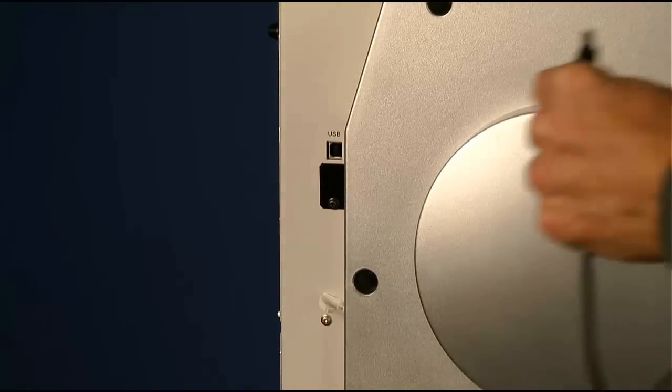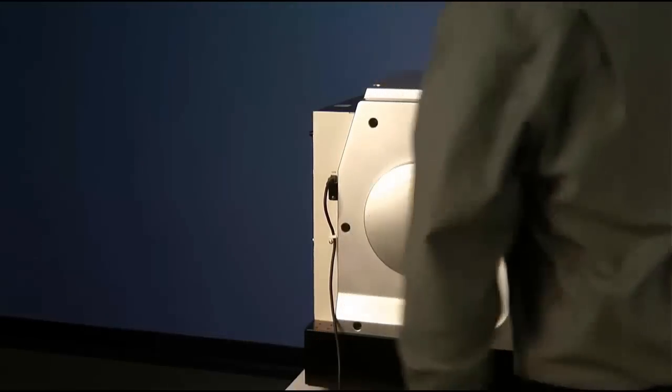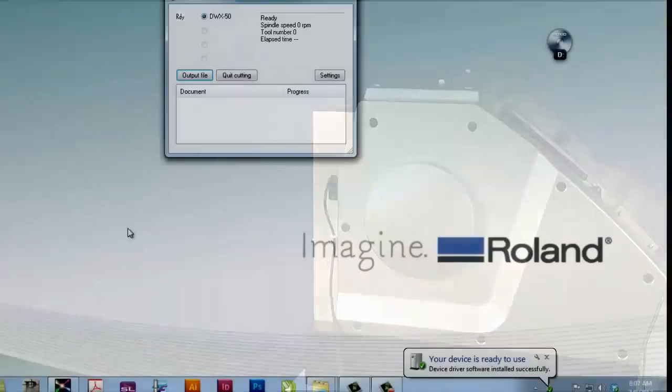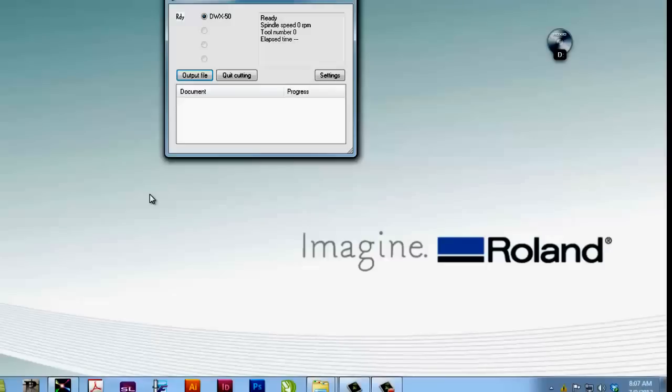You're now ready to connect your USB cable from your computer to the DWX50. Once you plug in to the left rear USB port of the machine, you can power on your DWX50 at the main switch. At this point, you will notice your device driver being installed successfully, and the DWX50 will show up as a ready status in your virtual panel.